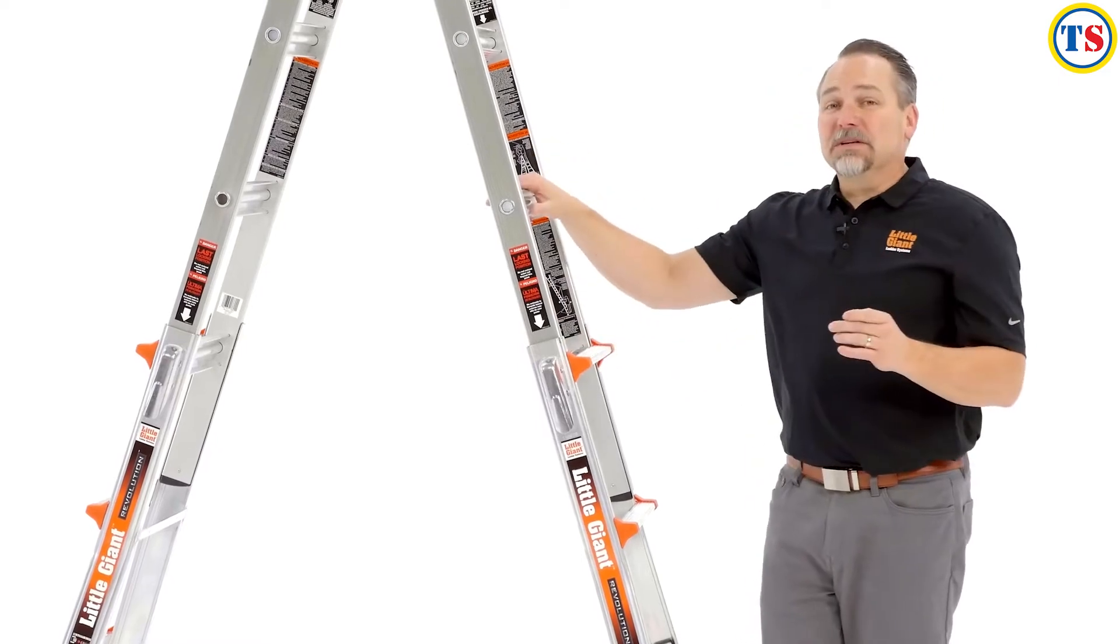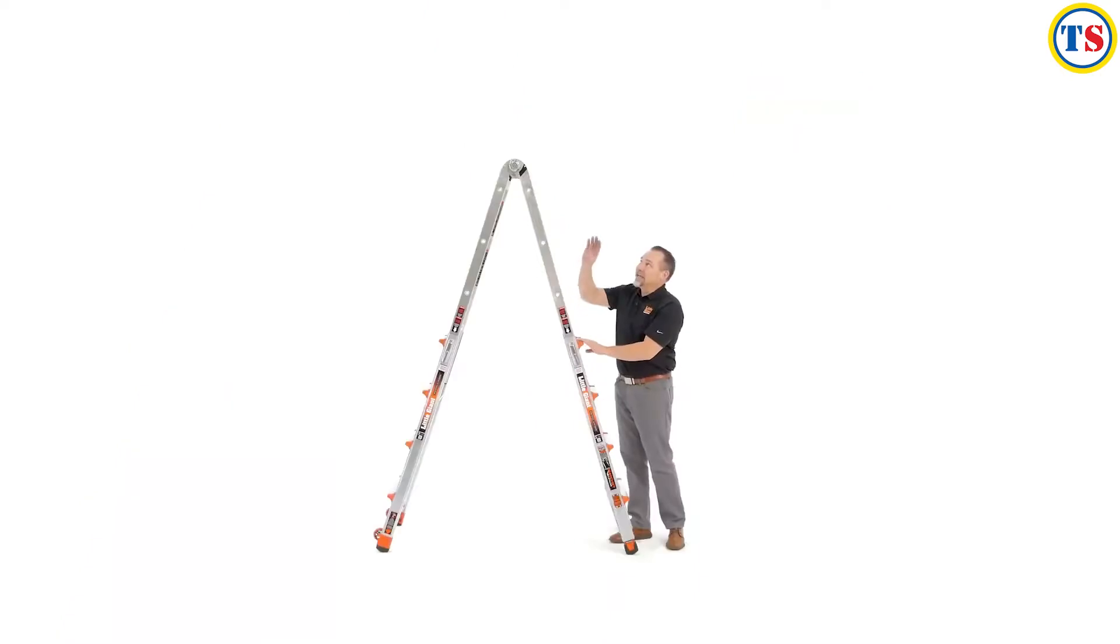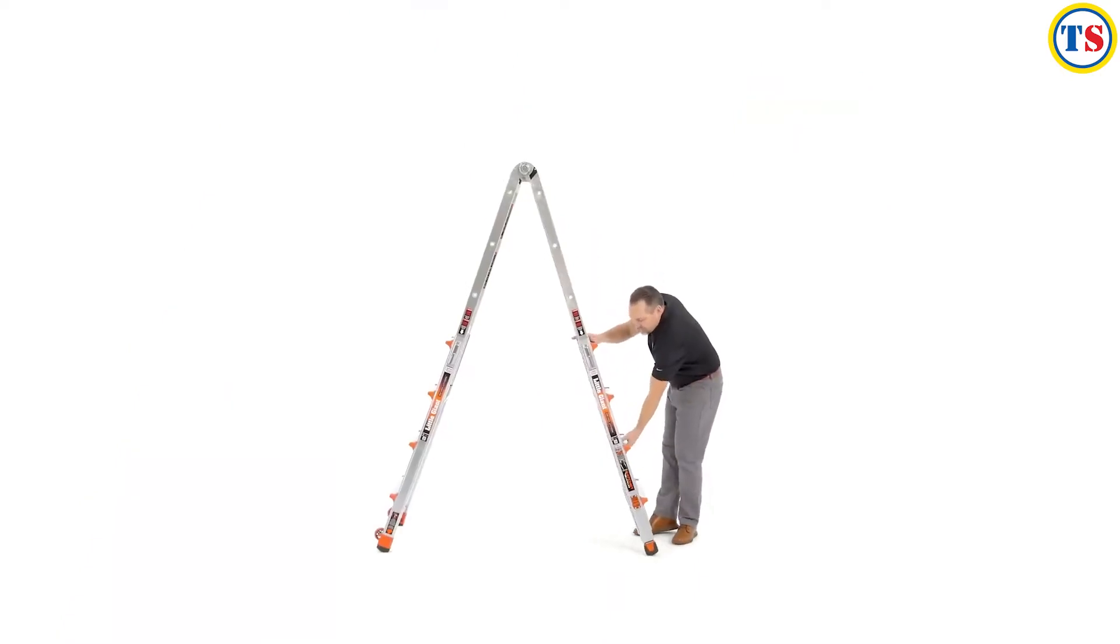Of course, there is going to be a little bit of tolerance between the inner section and outer section and inside the hinge. To overcome that tolerance, just pull the ladder towards you. Just a couple of inches should do it, and that tightens everything up.